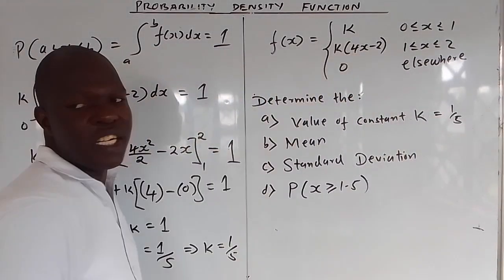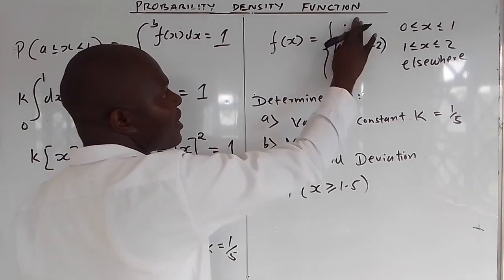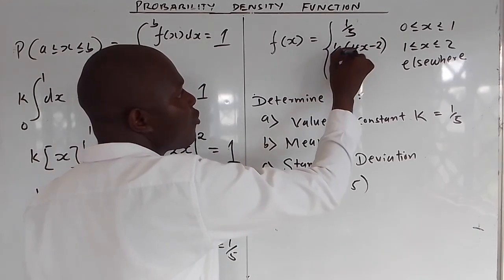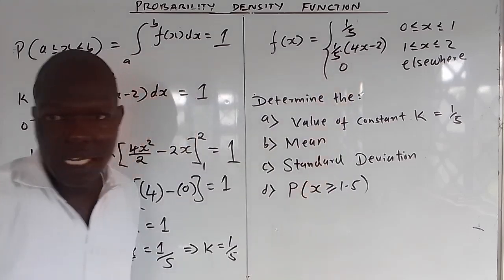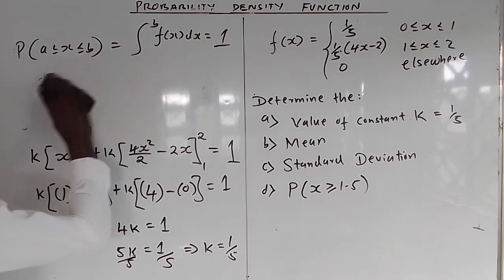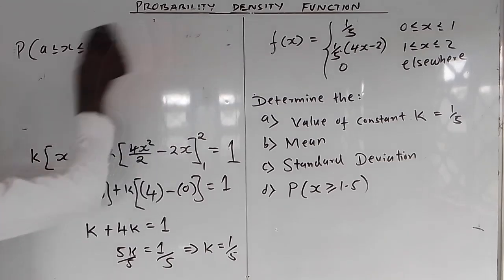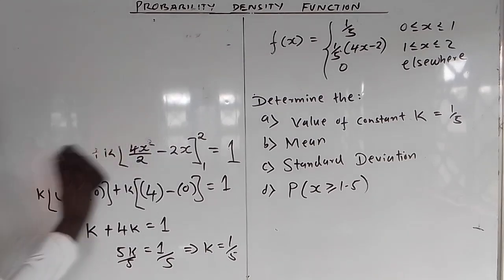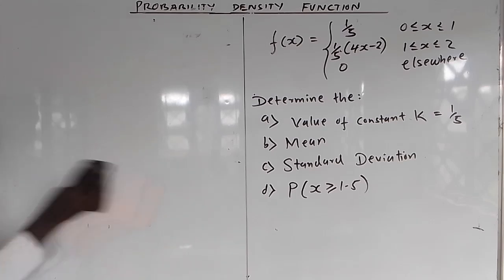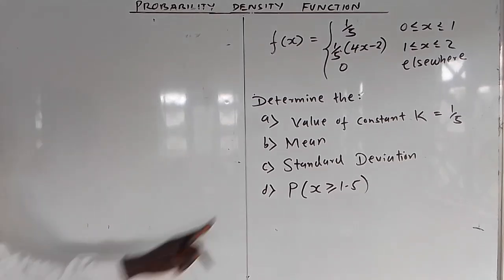So our constant k is 1/5. In your probability density function, wherever you see k, you substitute 1/5. We have found the value of k. Next, they want us to find the mean.